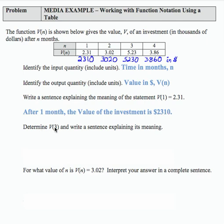Determine V of 3 and write a sentence explaining its meaning. V of 3 is 5.23 if you want the value specifically from the table, or V of 3 equals 5,230 in actual dollars.